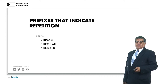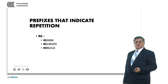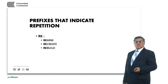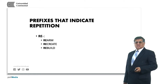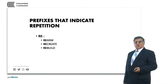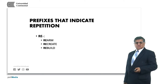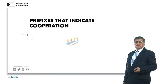Repetition: re- is the prefix that indicates that something has to be done again or was done again. For example, rearm, recreate, rebuild. Rearm means that you need to put things together again, or also to give arms — in this case weapons. Recreate and rebuild will follow the same line of thinking.